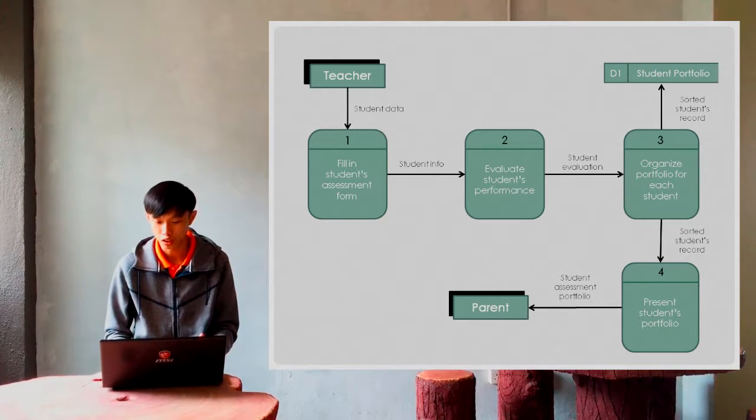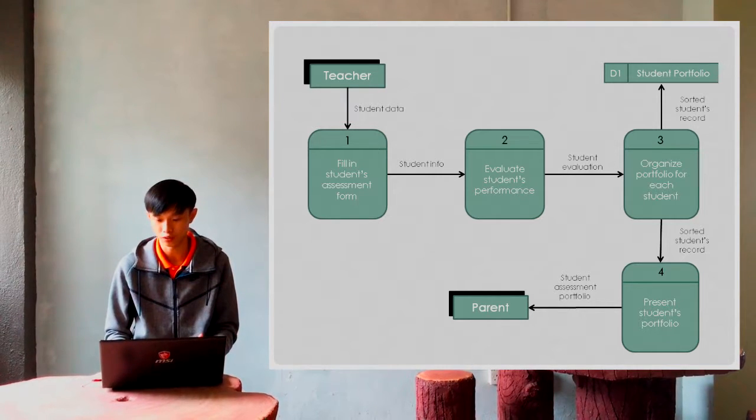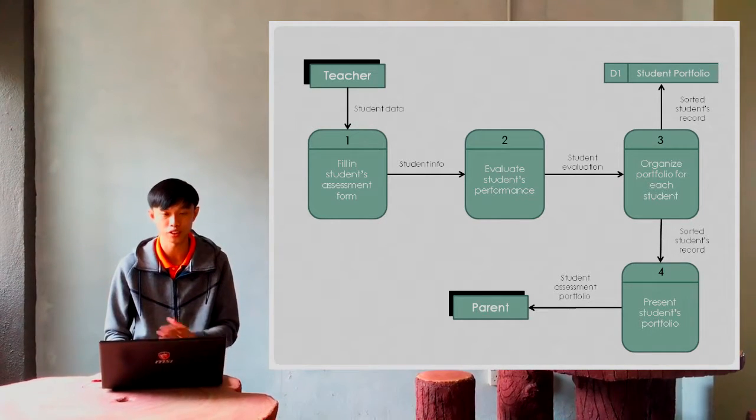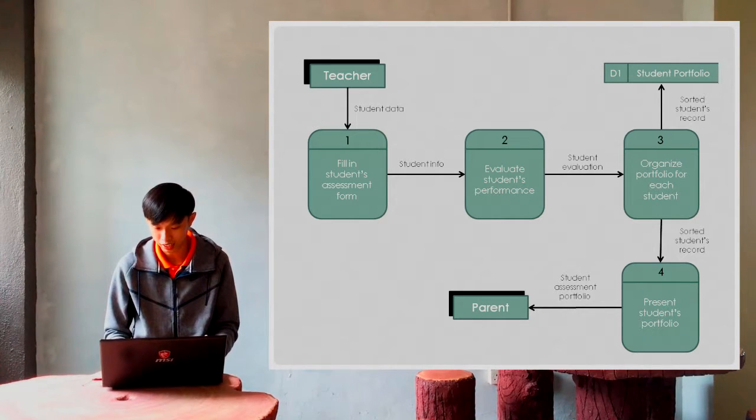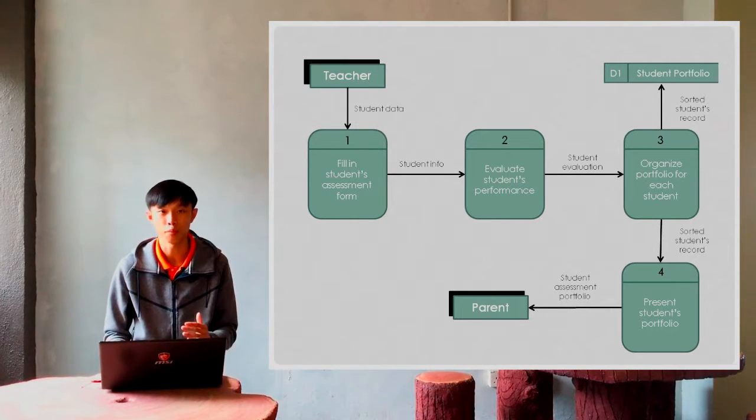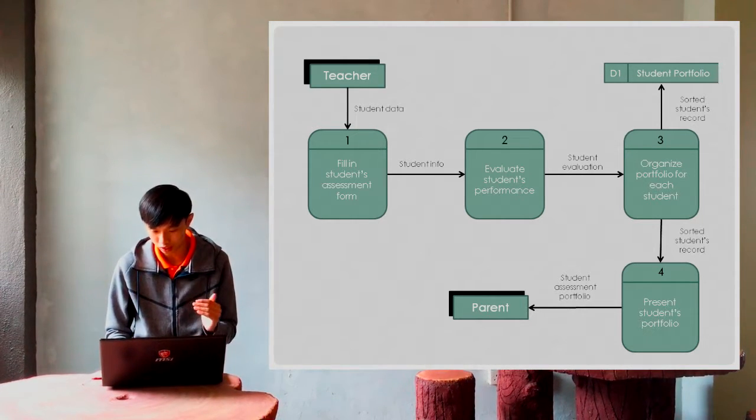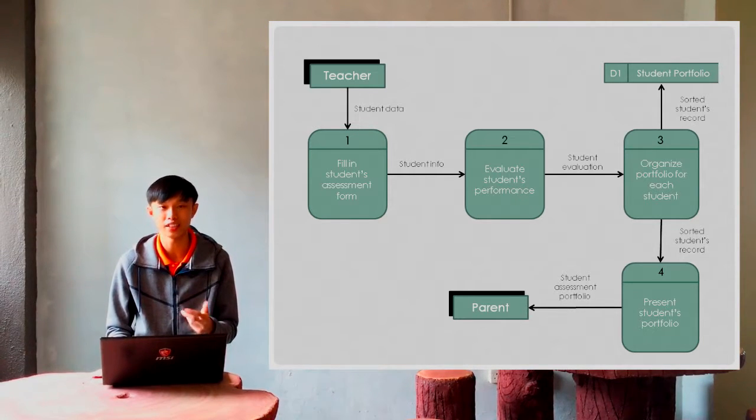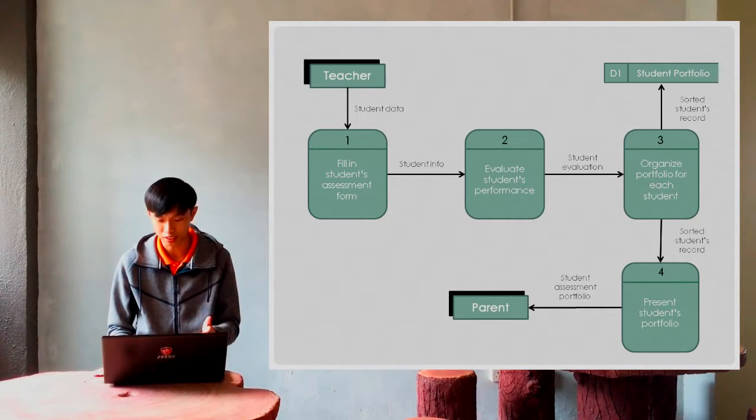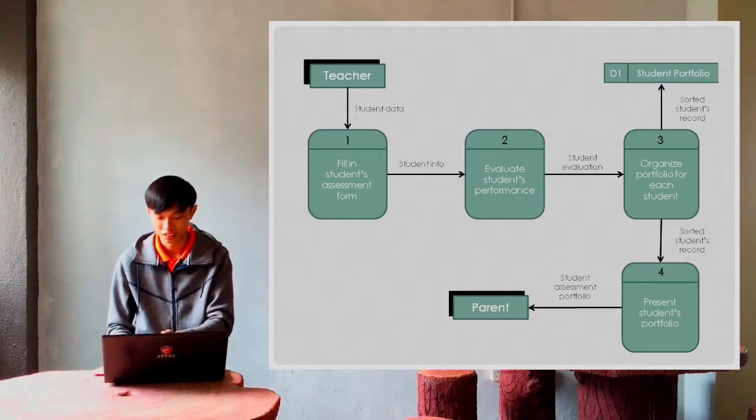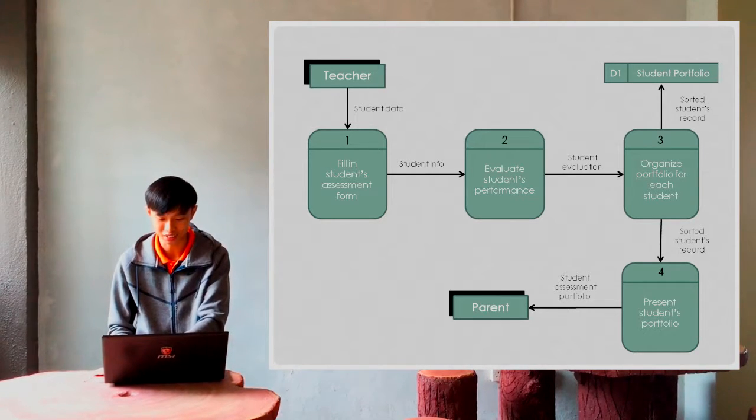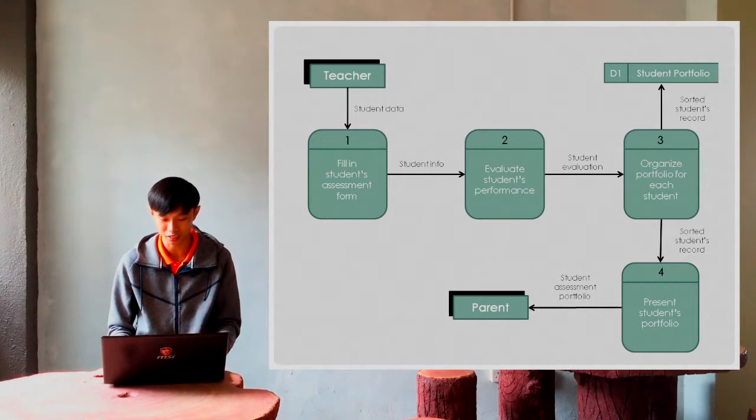One output goes to the database for the student portfolio which contains all the information. The other goes to the fourth process. The sorted student record will be presented to parents, and the fourth process is student assessment portfolio to the parent.